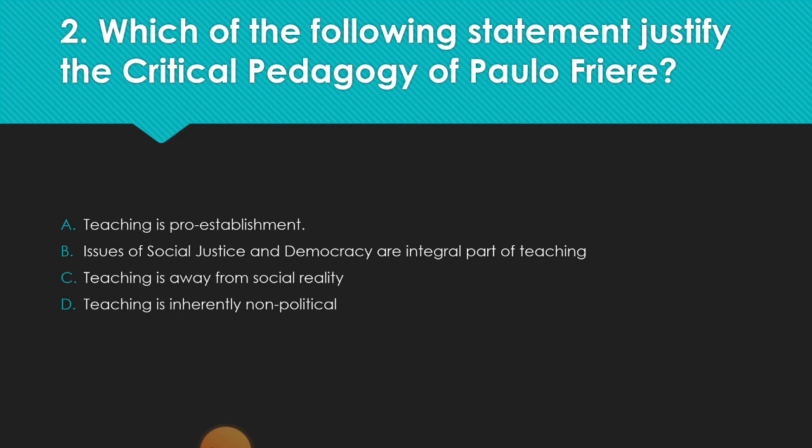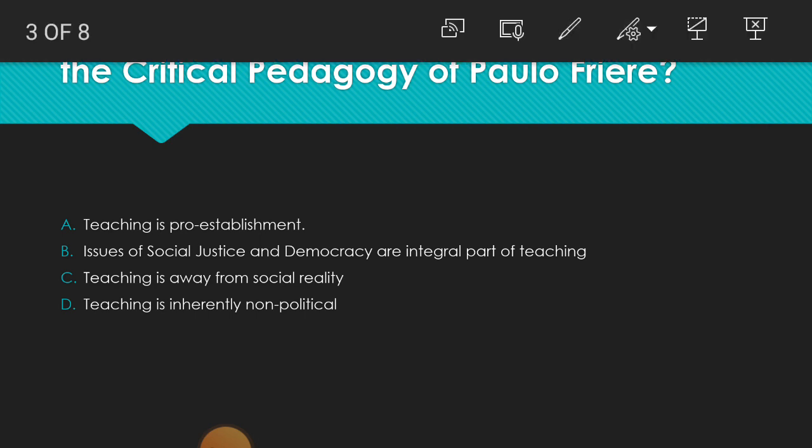The second question: Which of the following statements justifies the critical pedagogy of Paulo Freire? A) Teaching is pro-establishment, B) Issues of social justice and democracy are an integral part of teaching, C) Teaching is away from social reality, or D) Teaching is inherently non-political. Options A, C, and D are against the concept of critical pedagogy.